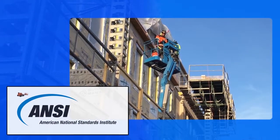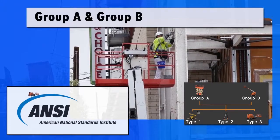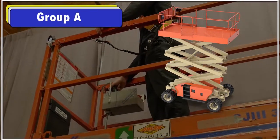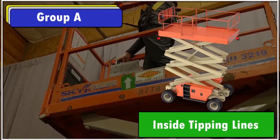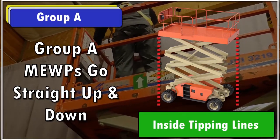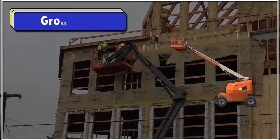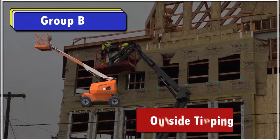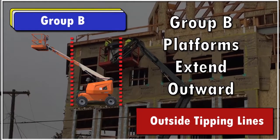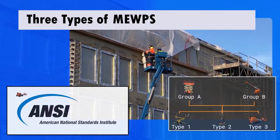The American National Standards Institute classifies aerial lifts, or mobile elevated work platforms, into two groups. Group A consists of mobile work platforms that move vertically but stay within the tipping lines of the machine — scissor lifts are an example. Group B consists of aerial lifts where the platform extends past the machine's chassis — a standard boom lift is an example of a Group B mobile elevated work platform.